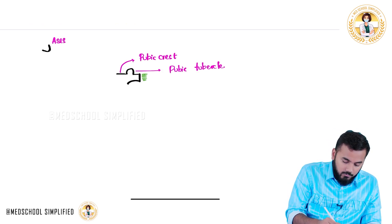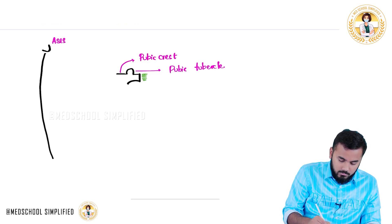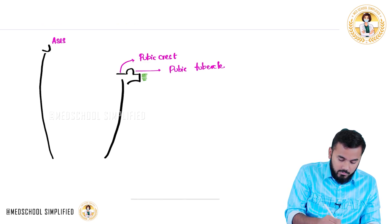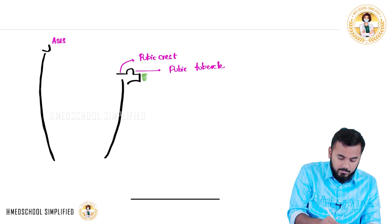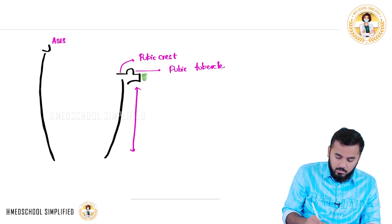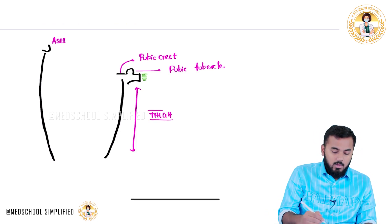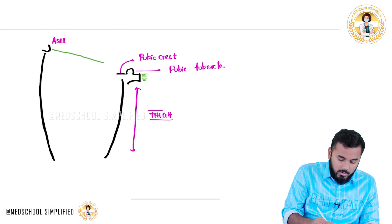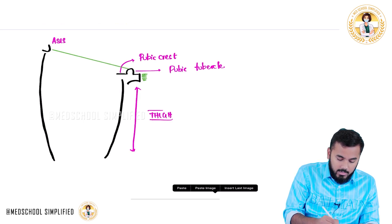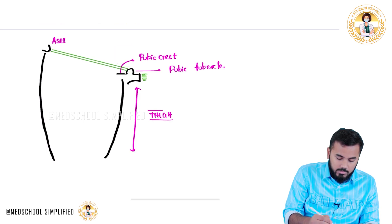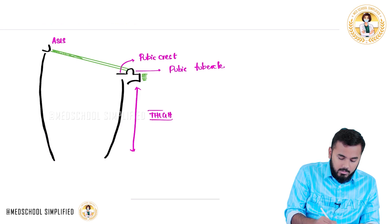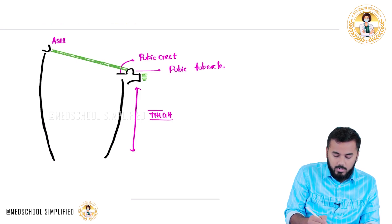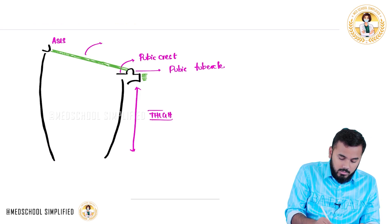This is where your entire lower limb forms — this is a picture of your thigh region. Now, one very important thing: connecting all the way from the anterior superior iliac spine to the pubic tubercle, we have a ligament. This ligament is called your inguinal ligament.